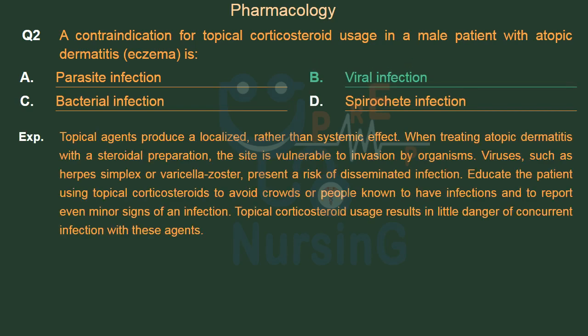Topical agents produce a localized rather than systemic effect. When treating atopic dermatitis with a steroidal preparation, the site is vulnerable to invasion by organisms. Viruses, such as herpes simplex or varicella zoster, present a risk of disseminated infection. Educate the patient using topical corticosteroids to avoid crowds or people known to have infections and to report even minor signs of an infection.